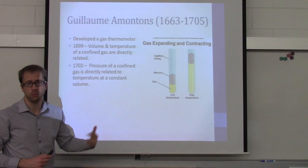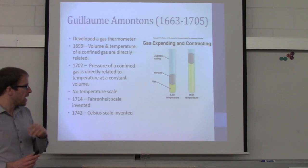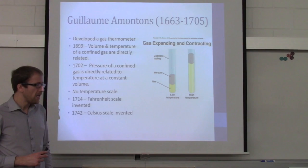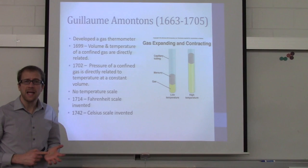Now this was before temperature scales were invented. The first one, the Fahrenheit scale, was invented in 1714, and the Celsius scale was invented in 1742. These temperature scales are going to play a very important role in understanding how volume changes relative to temperature.